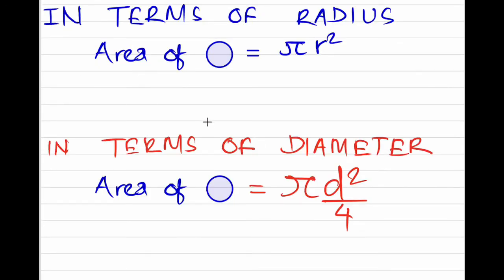The area of a circle is calculated as πr² whenever you know the radius.